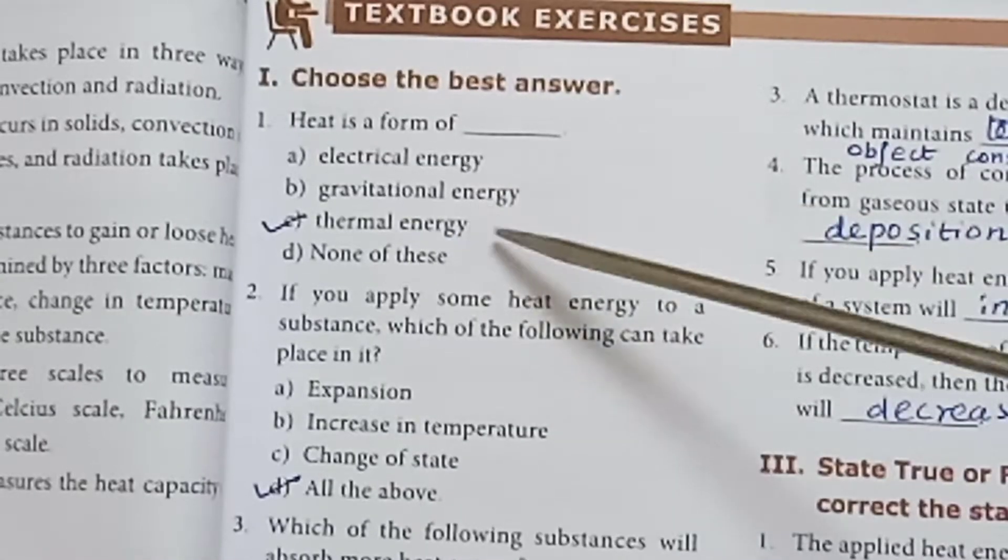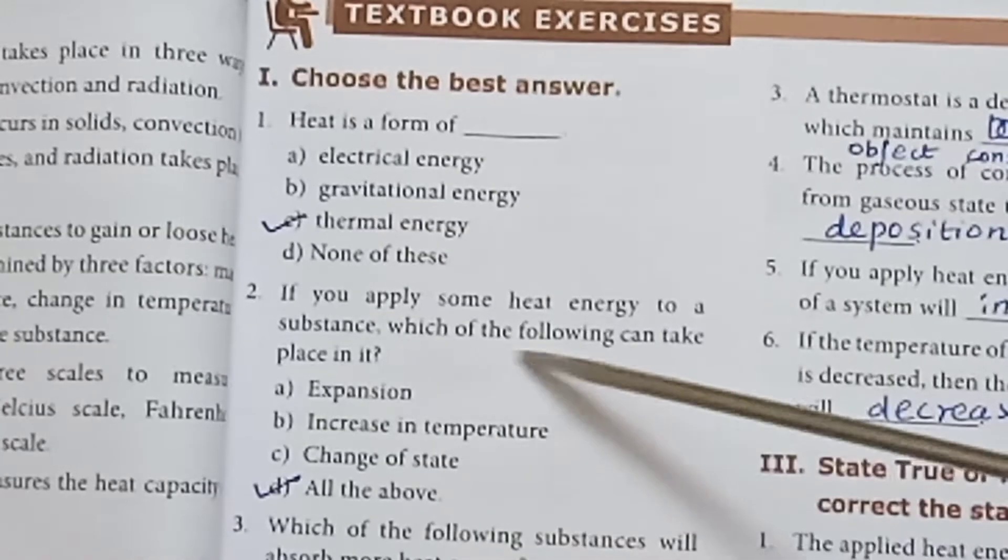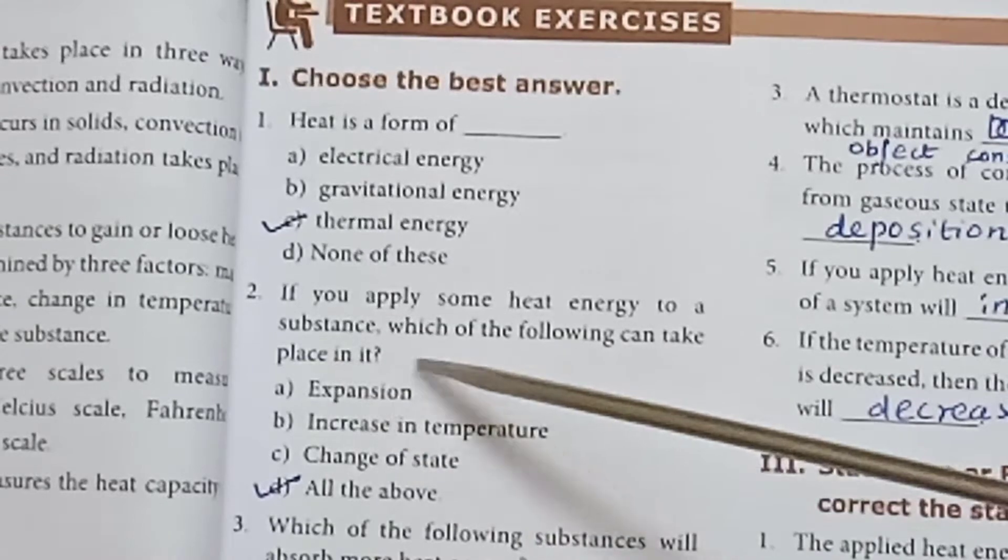Heat is a form of thermal energy. Second one: If you apply some heat energy to a substance, which of the following can take place in it? All the above.